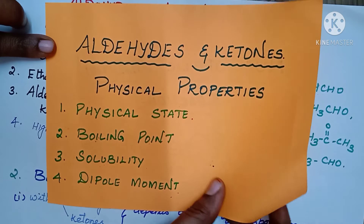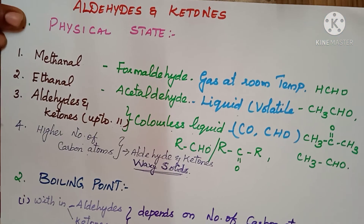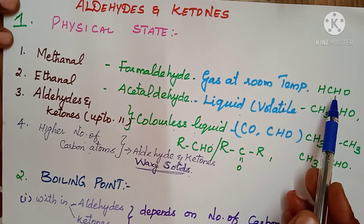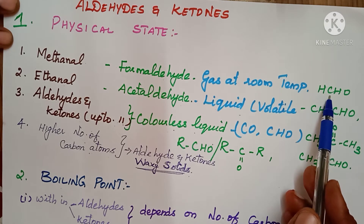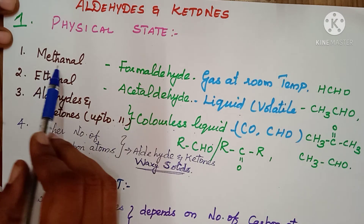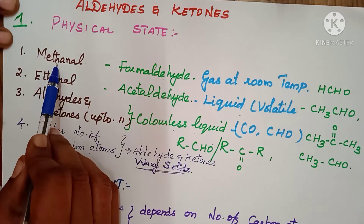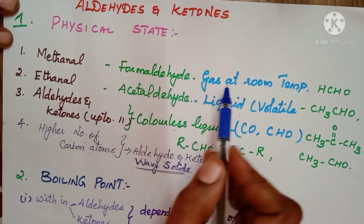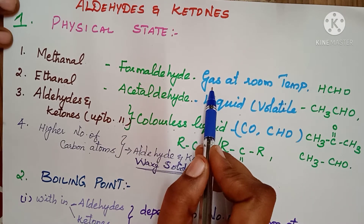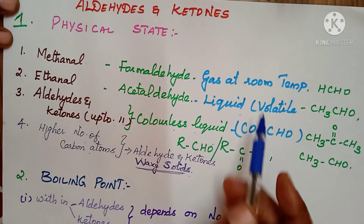The first point is physical state. The least number of carbon aldehyde is formaldehyde, HCHO. The IUPAC name is methanal. This is a gas at room temperature.